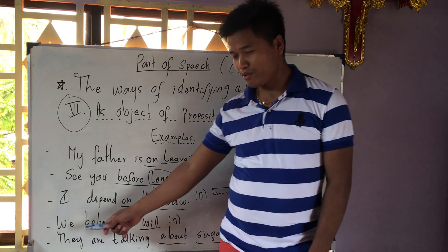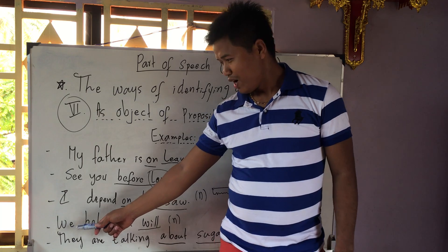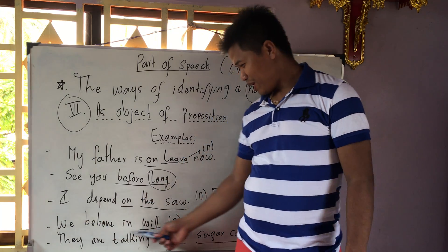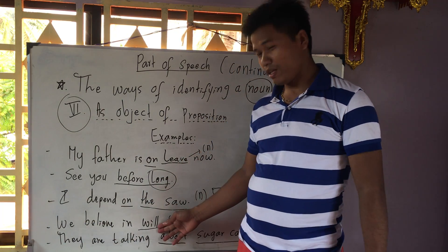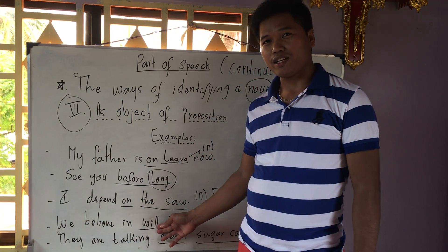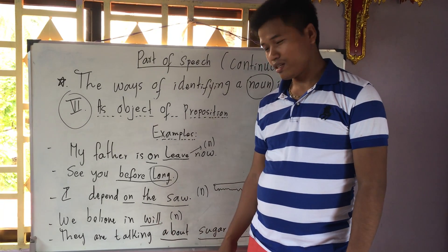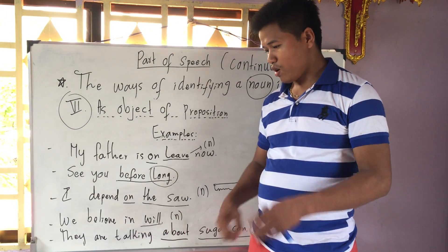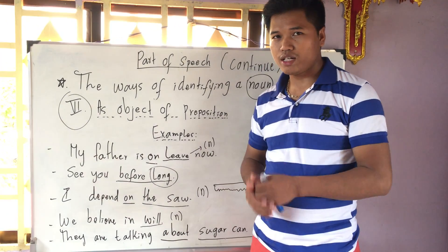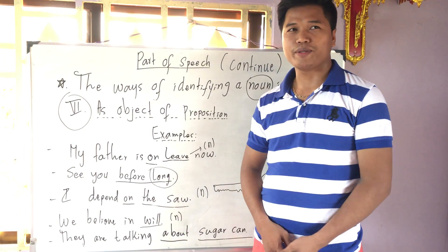Number four: 'Which believes in will.' Now we look at 'will' — 'will' here is not the verb for the future. 'Will' means a document about what someone leaves to their family when they die.